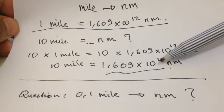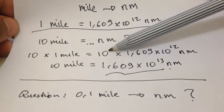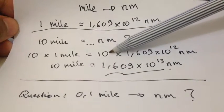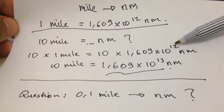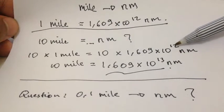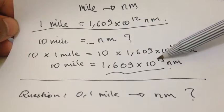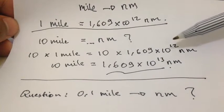Why do we have 10 power 13? Because we multiply 10 which has power of 1 with 10 power 12. And if you multiply it, we'll add the power in it. So we have 13, 1 plus 12.